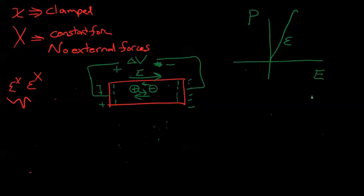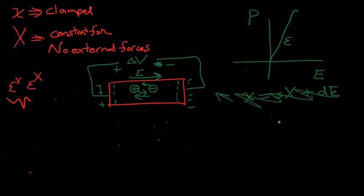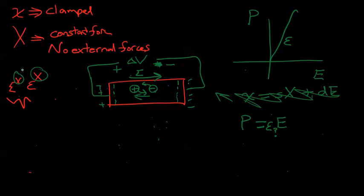Normally we look at this problem from a mechanical perspective involving strain and stress. But from an electrical perspective, we are applying an electric field with some permittivity — permittivity question mark — and that causes some polarization. There are only two types of permittivity: constant strain and constant stress. Since we are not applying any stresses here, we're going to have a permittivity at constant stress.